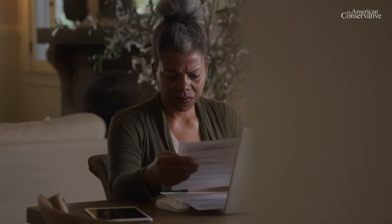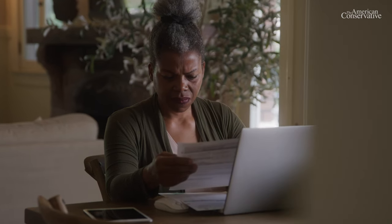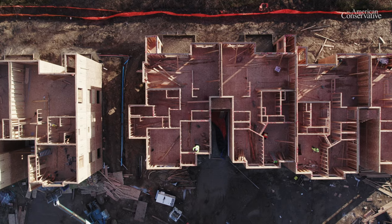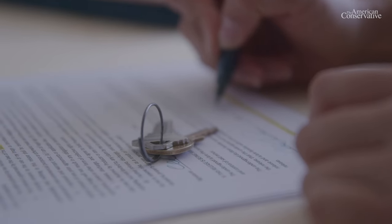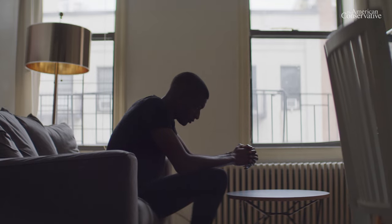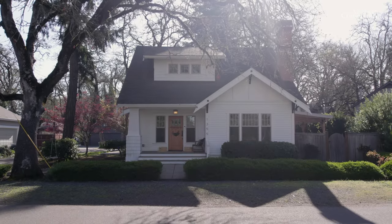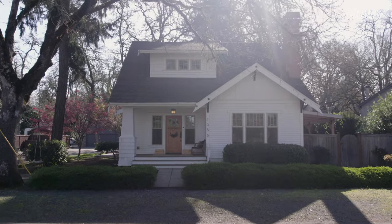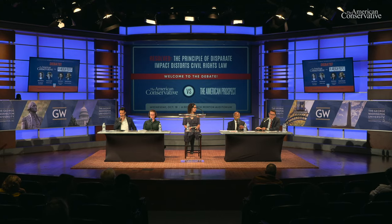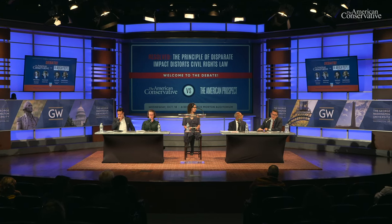We know that people of color were targeted for denial of credit in the 1930s through redlining, and that they were also targeted in the 2000s for reverse redlining by unscrupulous mortgage brokers who were seeking to steal home equity.